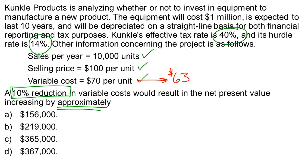The other approach is to recognize that the only thing changing is that $7 variable cost reduction. If variable costs are reduced by 10%, which is $7, what is the impact on net present value? All we need to do is calculate the net present value of that $7 difference. There are 10,000 units per year, and we've reduced the variable cost by $7 per unit, which means our cash inflows would increase by $70,000 per year.